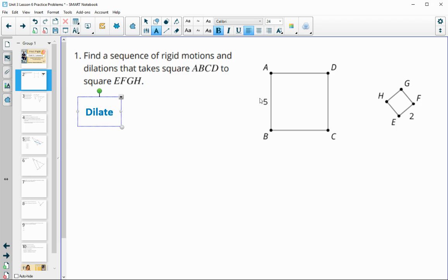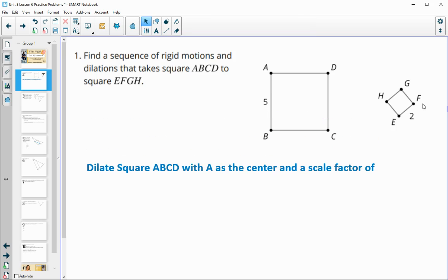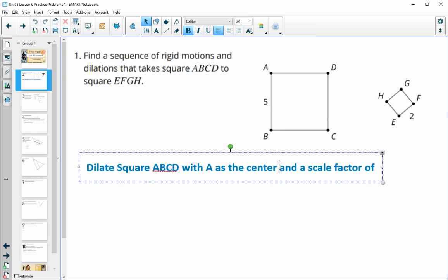Since we have the side lengths given here, I'm going to start with a dilation. So I'm going to dilate square ABCD with A as the center and a scale factor of two fifths. Remember when you do scale factor, you need to use the new length divided by the original. So that's going to get my square to be the same size as the other one.